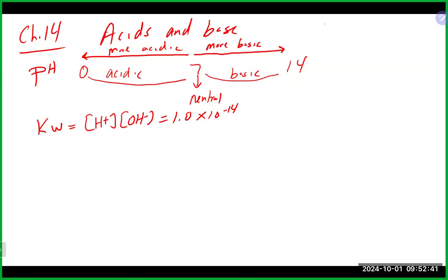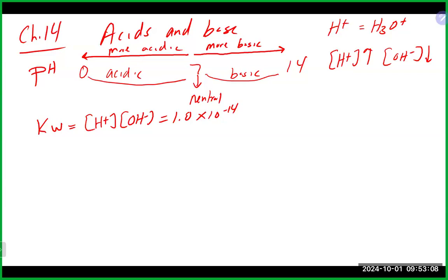Anywhere you see H+, you can basically swap it out for the hydronium ion — they mean the same thing. This allows you to figure out either the H+ or OH- concentration. They are opposites: as one goes up, the other goes down. If your H+ concentration is larger than OH-, you have an acidic solution; if OH- is greater, it's basic; and if they both equal 1 times 10 to the minus 7, you have a neutral solution.